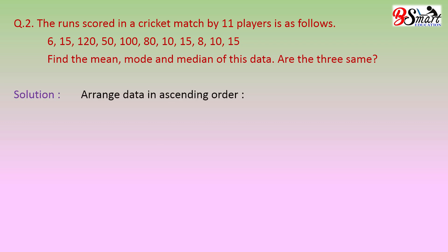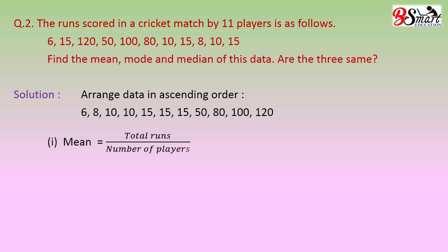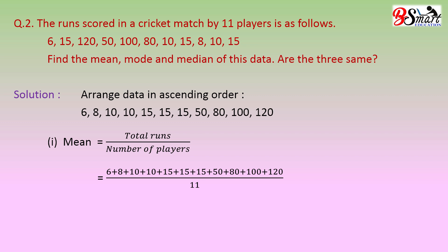Arrange the data in ascending order. First, we have to find the mean. Mean is equal to total runs divided by number of players. Total runs divided by 11 players is 429 runs divided by 11, which is 39. Hence, the mean of the given data is 39 runs.